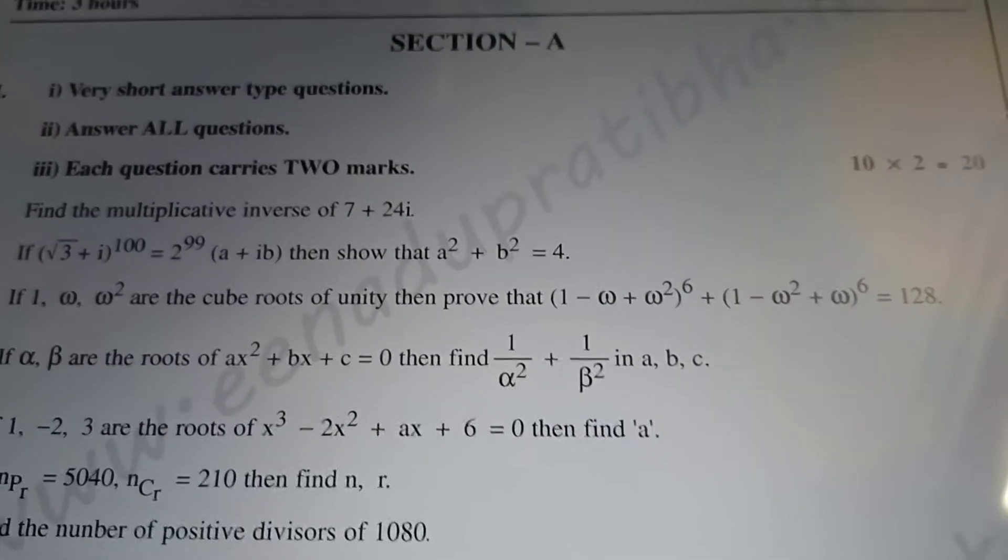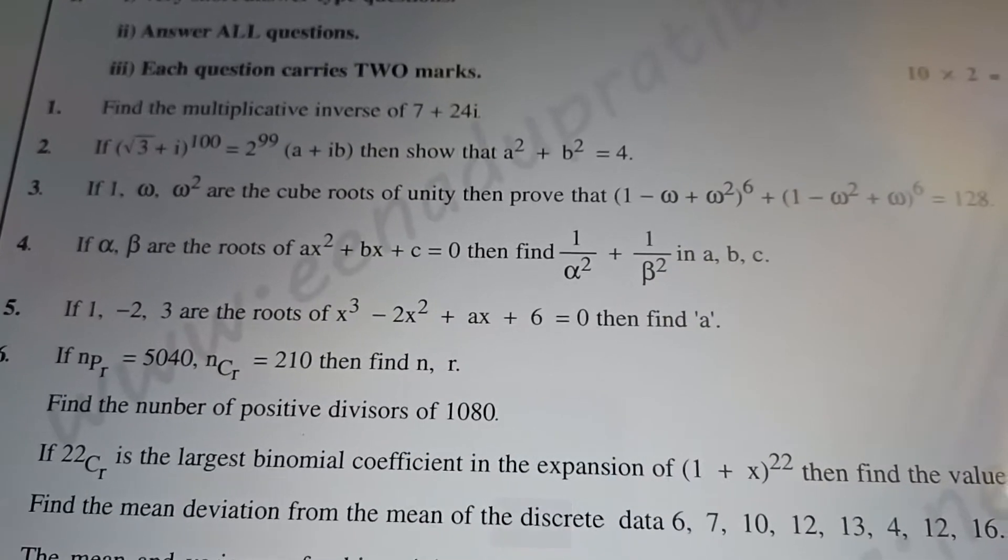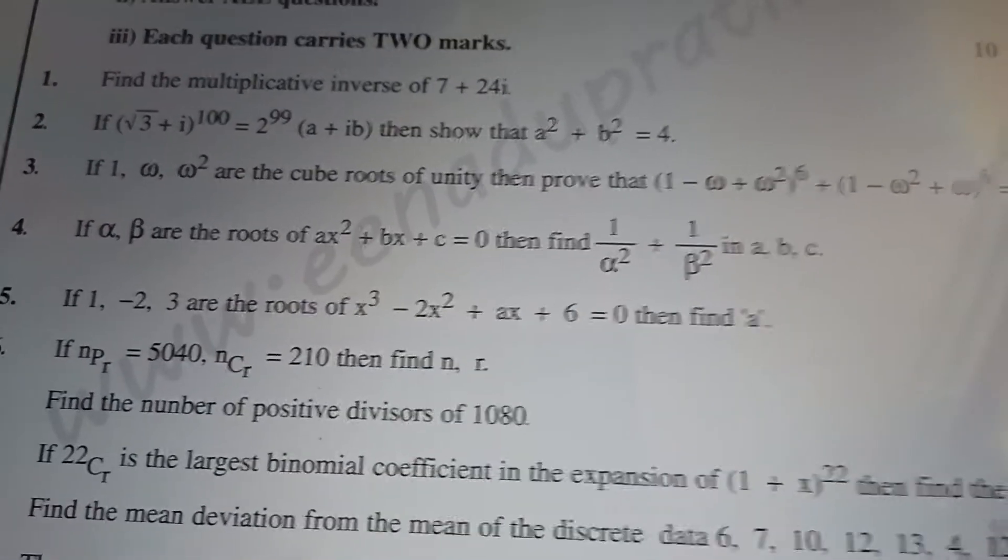Yeah, omega, 1, omega, omega square are the cube roots of unity. I will check. Next, 1 by alpha square plus 1 by beta square in ABC. Alpha, beta, then find this value. Yeah, find the value of a.